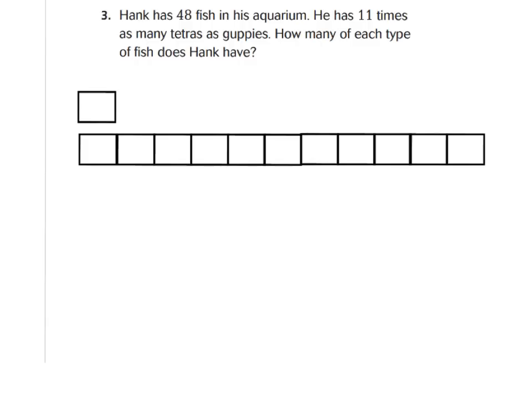So let's take a look at question three. It says Hank has 48 fish in his aquarium. So we know he has a total of 48 fish. He has 11 times as many tetras as guppies. How many of each type of fish does Hank have? So let's look at what we know. We know he has a total of 48 fish and he has 11 times as many tetras as guppies. So we know tetras is going to be bigger because he has 11 times as that. So we know we're going to put G for guppies, make one box. And we're going to make a T for tetras and make 11 boxes because he has 11 times as many as that. So go ahead and take your time and make a letter G and make a box, and make a letter T and make 11 boxes.